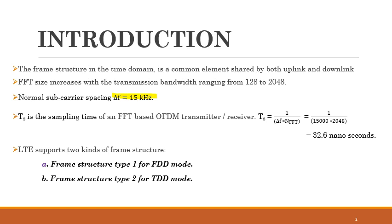Considering the subcarrier spacing and the FFT size, we will calculate the sampling time. Sampling time is given by Ts equal to 1 by delta F into NFFT. Delta F is equal to 15 kilohertz, and the FFT size is equal to 2048 for a transmission bandwidth of 20 megahertz. Substituting these values, we get a sampling time of 32.6 nanoseconds. We will be using this later.